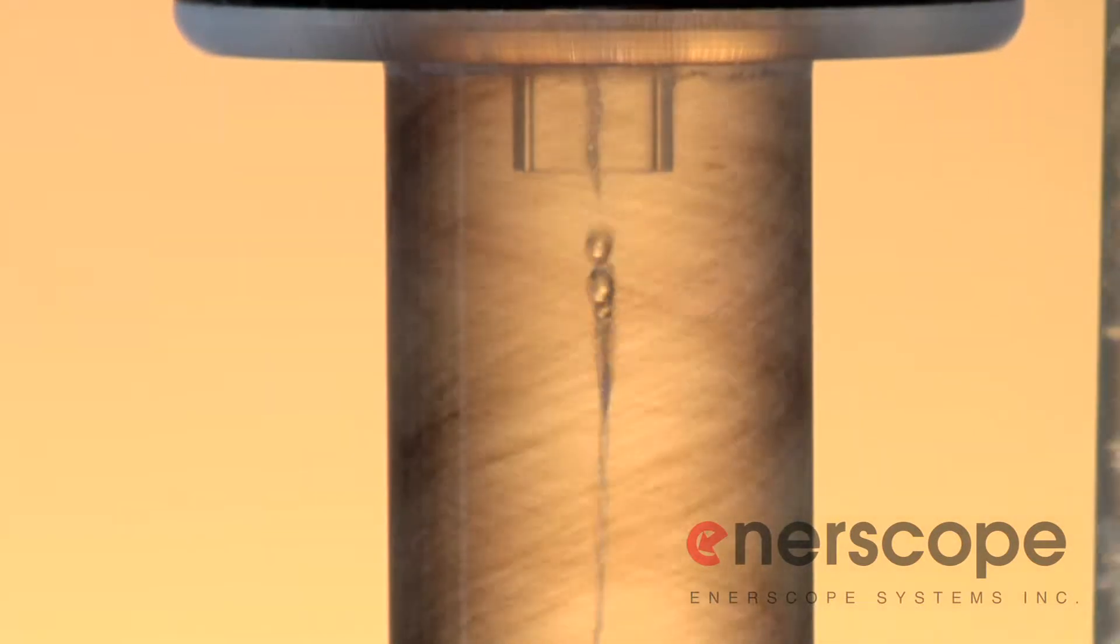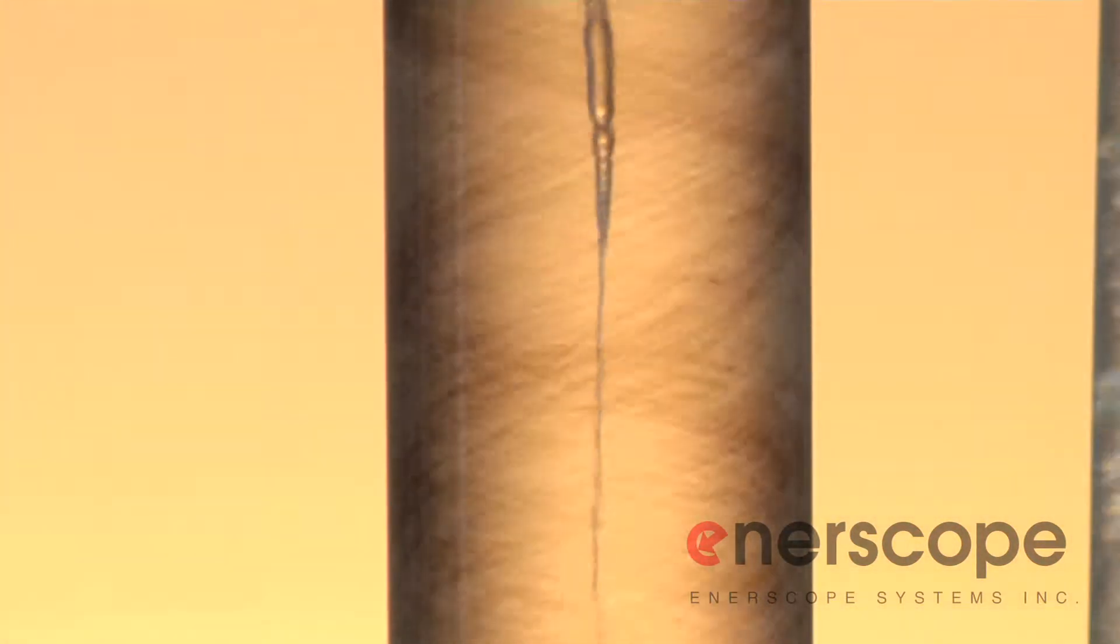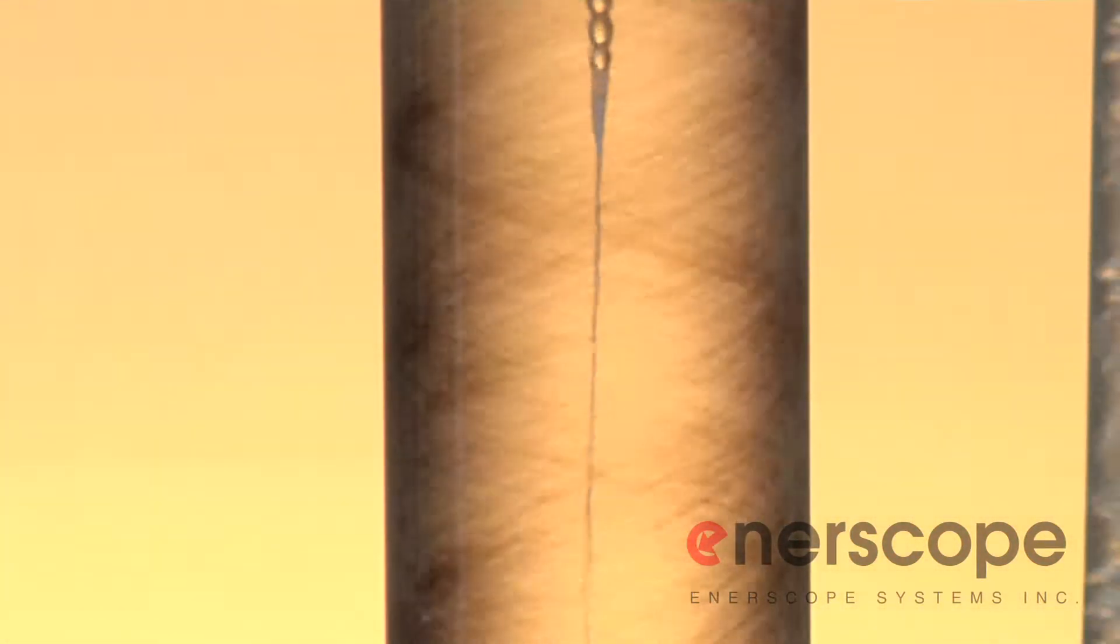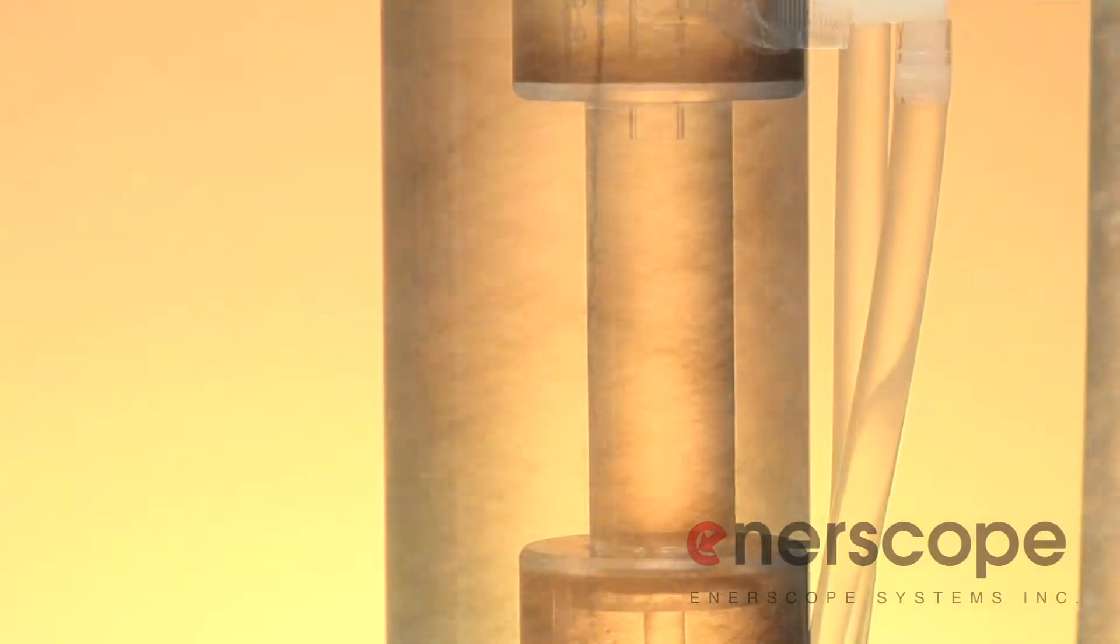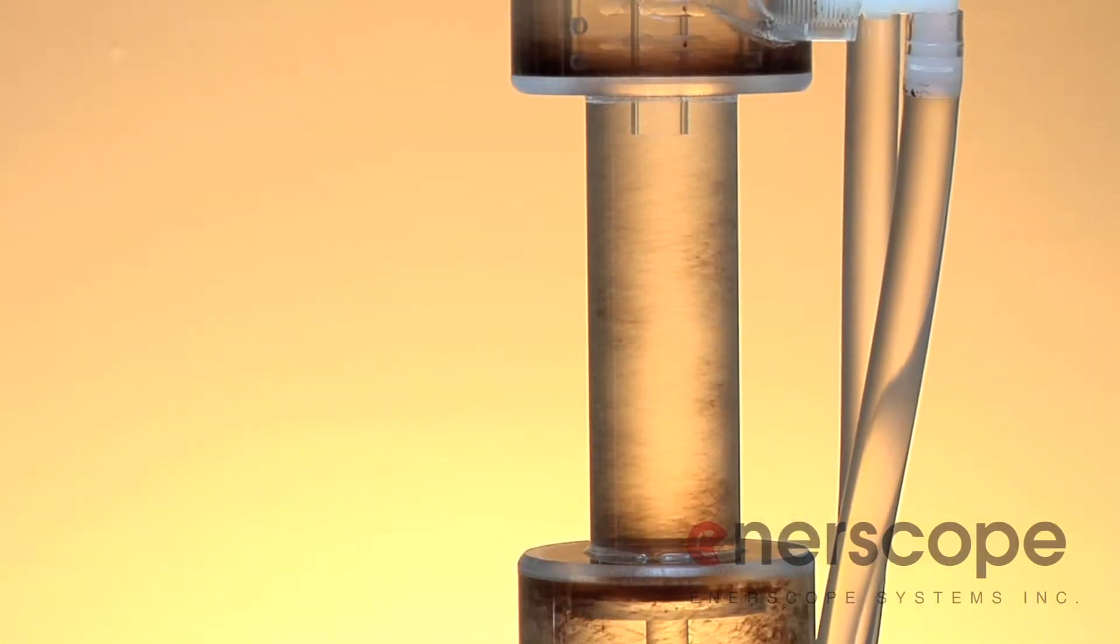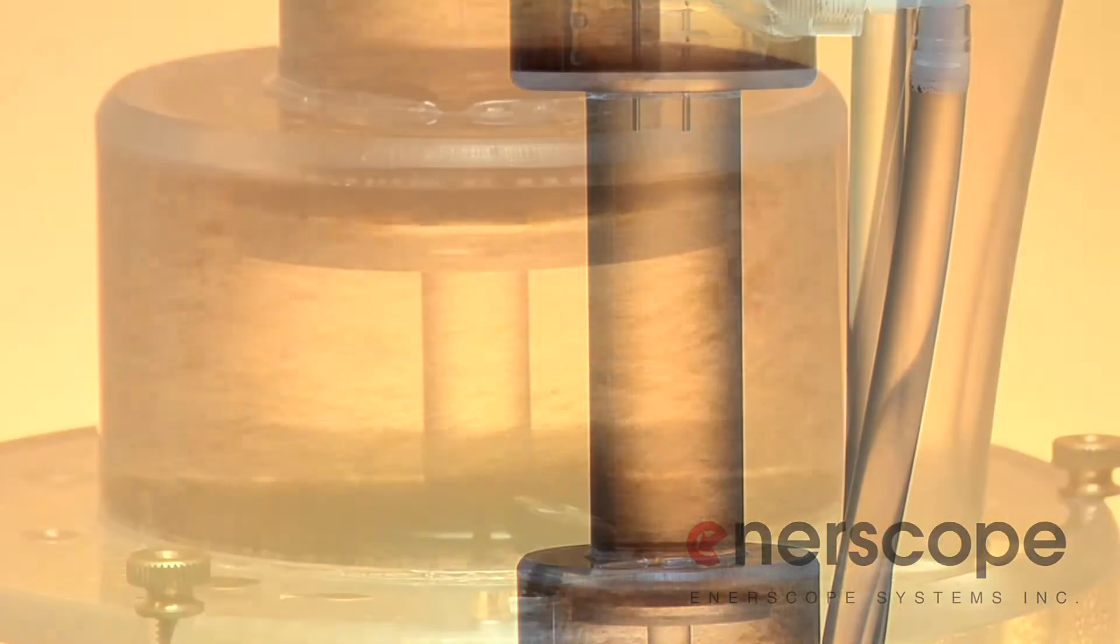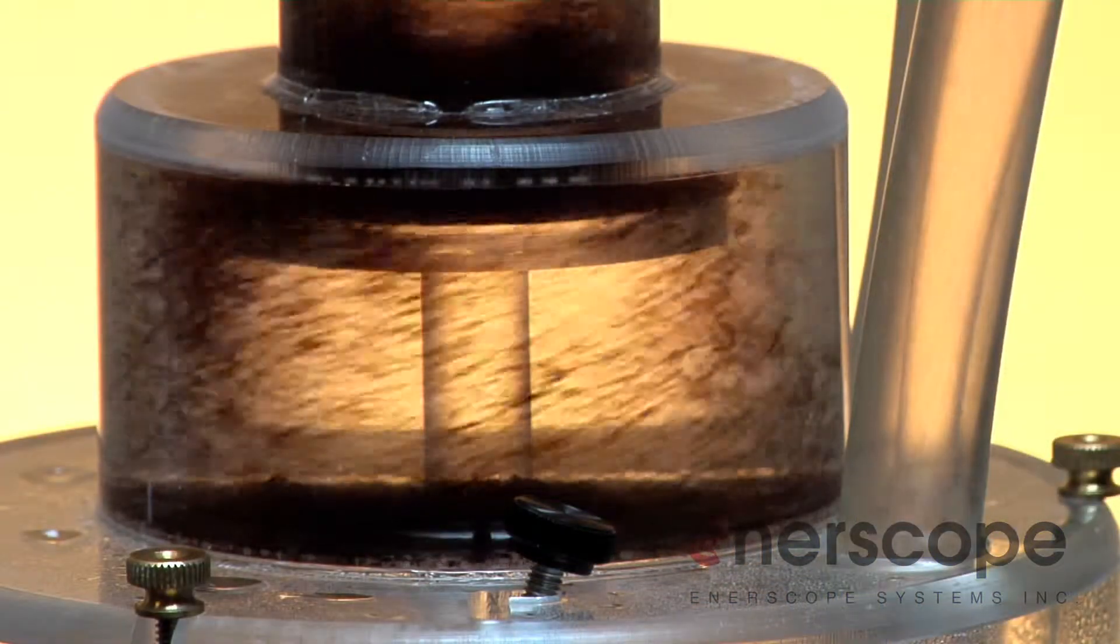The particles in the fluid are affected by the centrifugal action once in the separation chamber and make their way to the perimeter in a laminar flow before reducing their rotational velocity. The solids are drawn down and slowly settle into the solids collection chamber.